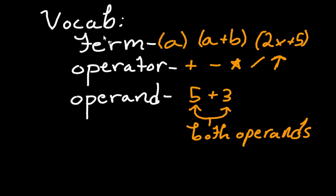So let's actually get some vocab down. A term is basically anything you can put in a parenthesis. So like a is a term. However, a plus b is also a term. And 2x plus 5 is also a term. And what I want you to see from that is that there can be terms inside of terms. So like this whole big 2x plus 5, that can be one term. However, inside of it we have a 2x, that is a term. And we have a 5, that's a term. So this whole big term has two terms inside of it.